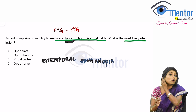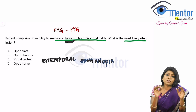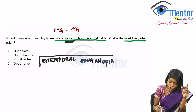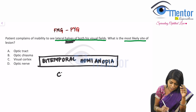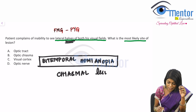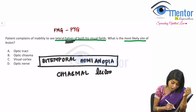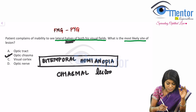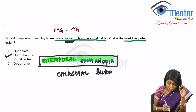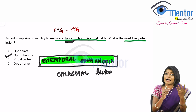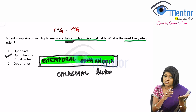So even if you do not know any concept, you must have memorized somewhere that bitemporal hemianopia is a classical visual field defect of a chiasmal lesion. So we've already got our answer, which is optic chiasma. Bitemporal hemianopia is a classical visual field defect of a chiasmal lesion.